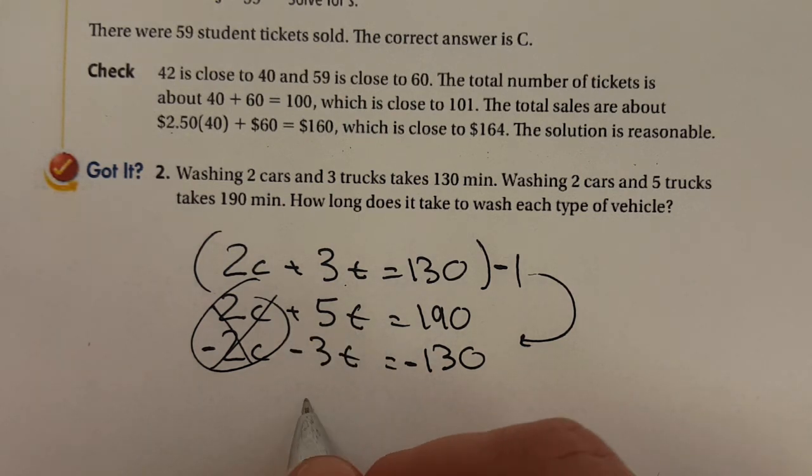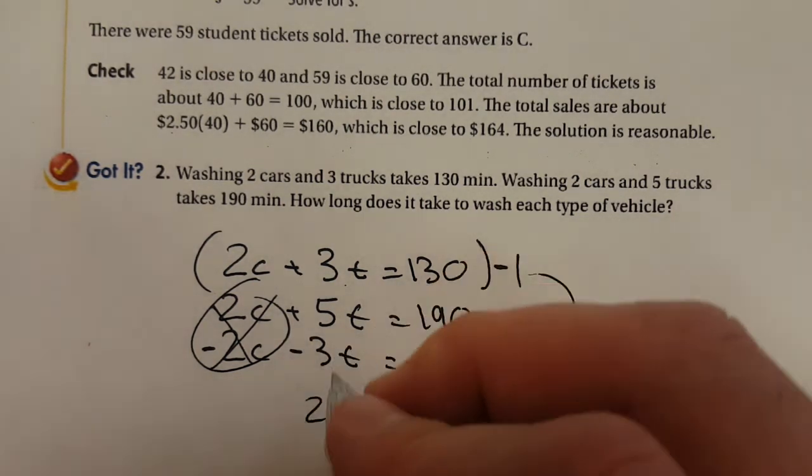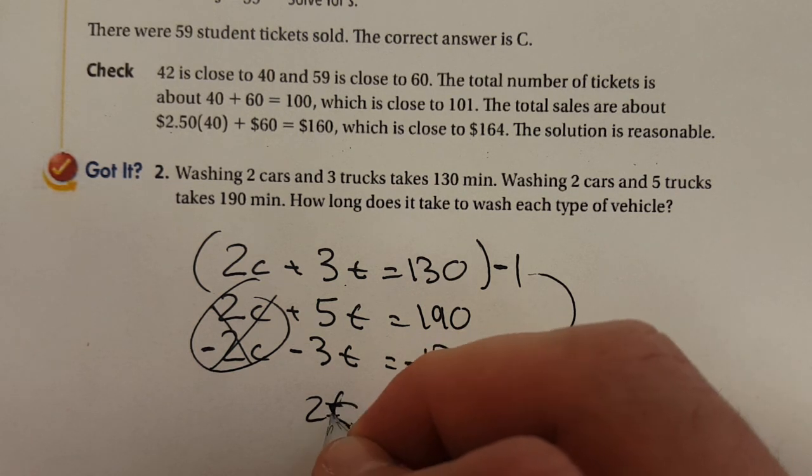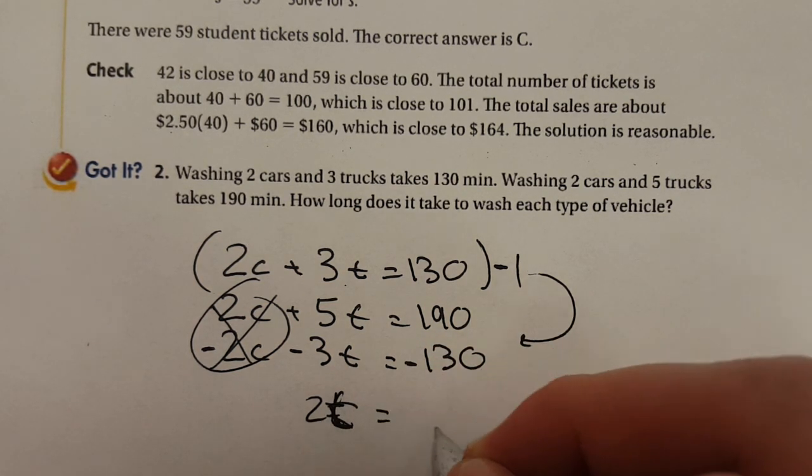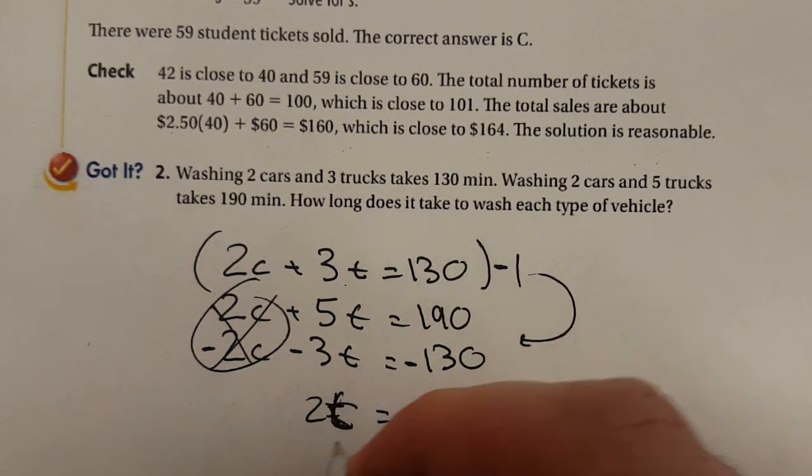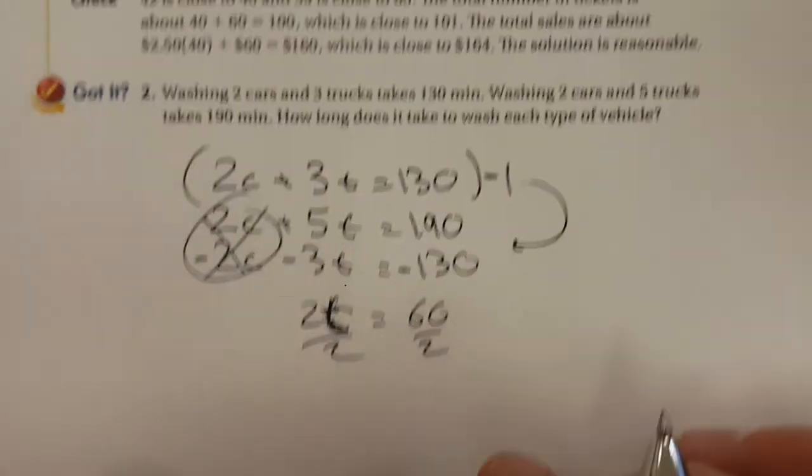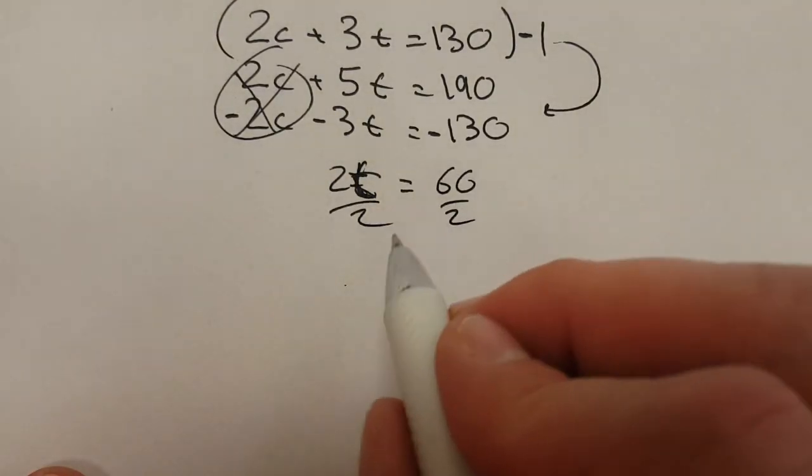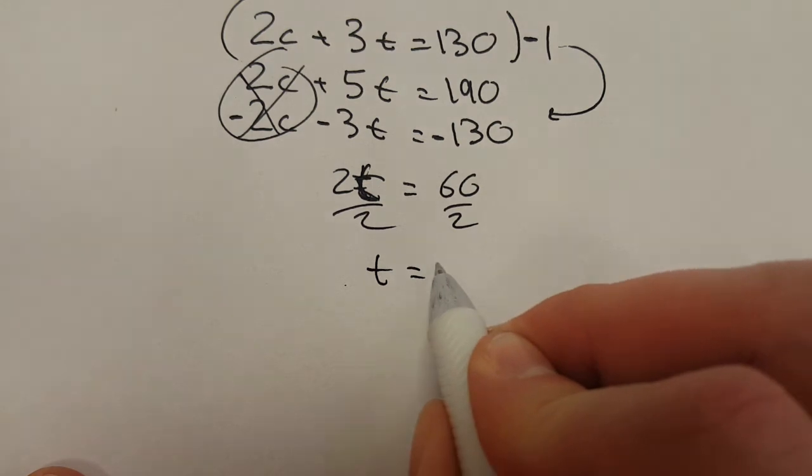5t minus 3t is gonna be 2 trucks. Oops, I'm gonna make an F there. My cursive Ts look like Fs. I get confused. I don't do cursive very often. Divided by 2 divided by 2. There we go. Looks like 2 trucks is 60 minutes. So one truck is gonna take you 30.